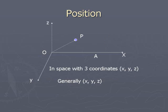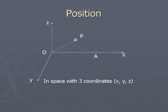If the point P is in space, it requires three coordinates for locating it. Generally, we represent them as x, y, z.